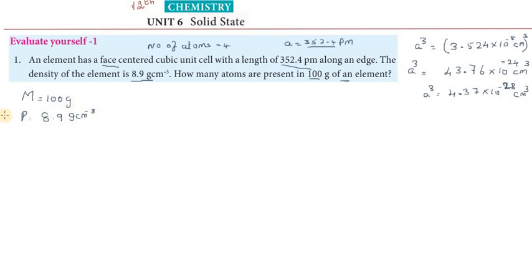The total volume. Volume equal to mass by density. Mass is 100, so 100 divided by 8.9 grams per centimeter cube. This gives 11.23 centimeter cube. So the total volume.